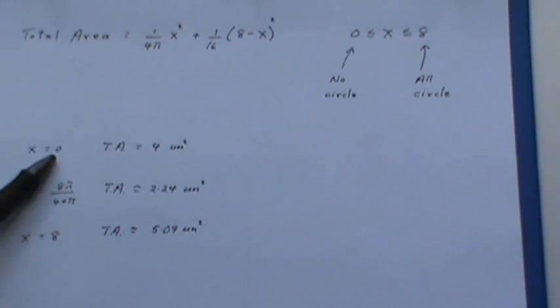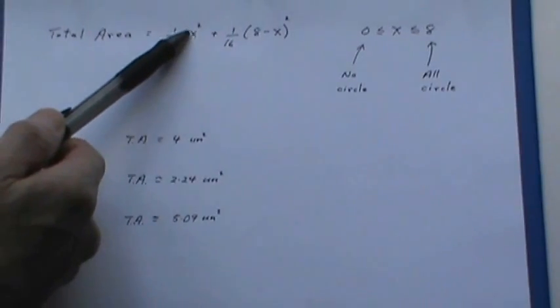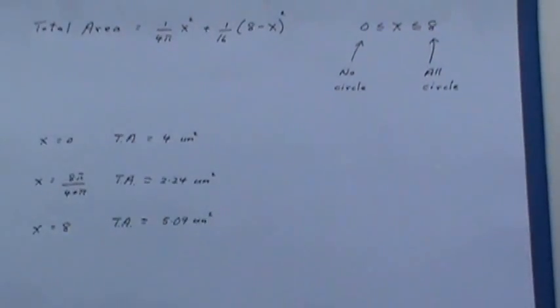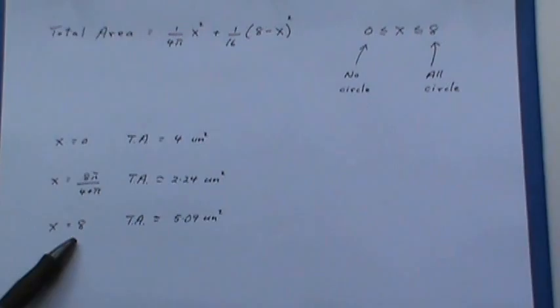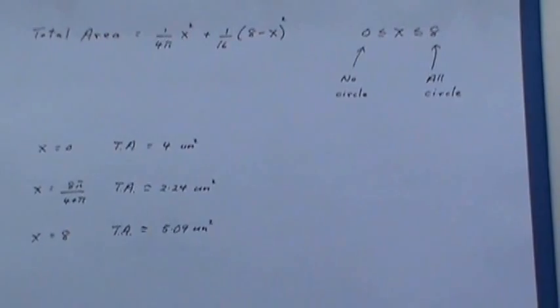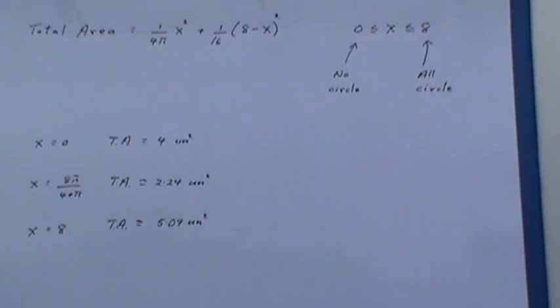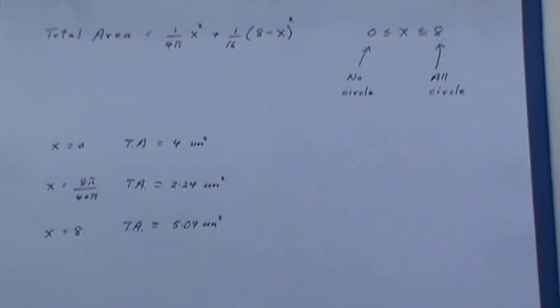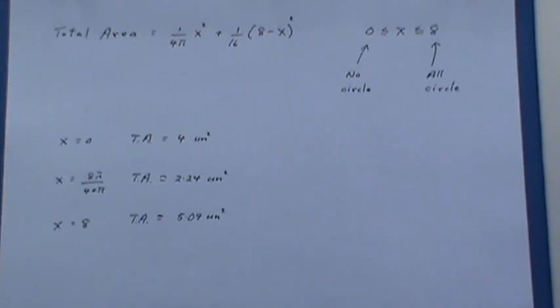Now if you substitute values in. If X equals 0 there's no circle. Putting the X equal to 0 there all you get is 1/16 times 8 squared which is 4 square units. At the other extreme putting in an 8 for X this is 0 and we just get an 8 squared there. And this is our value that we came up with when we took the derivative. As you can see the minimum area is the 2.24 square units and the maximum area is the 5.09 square units.